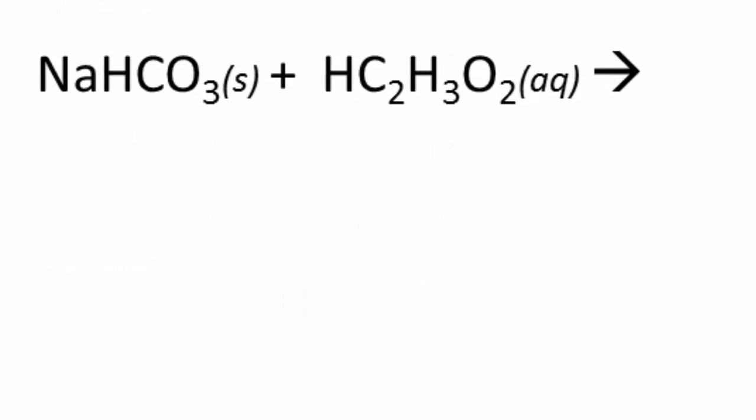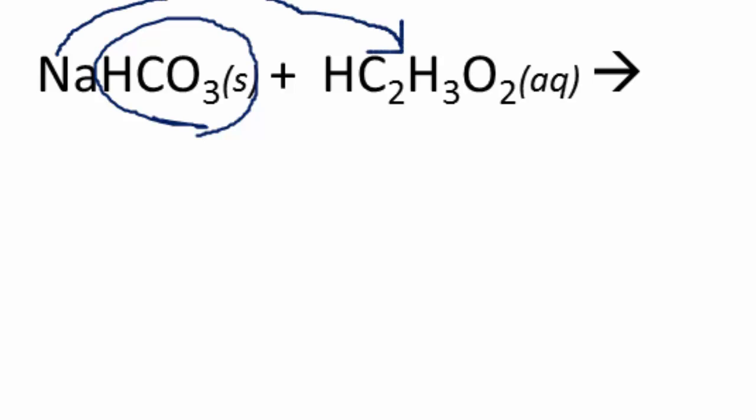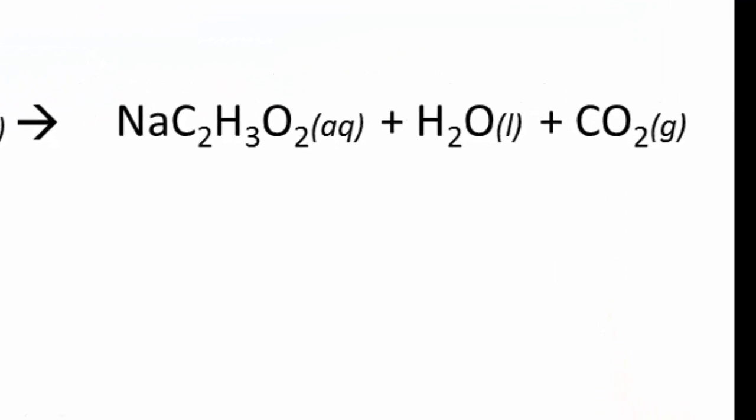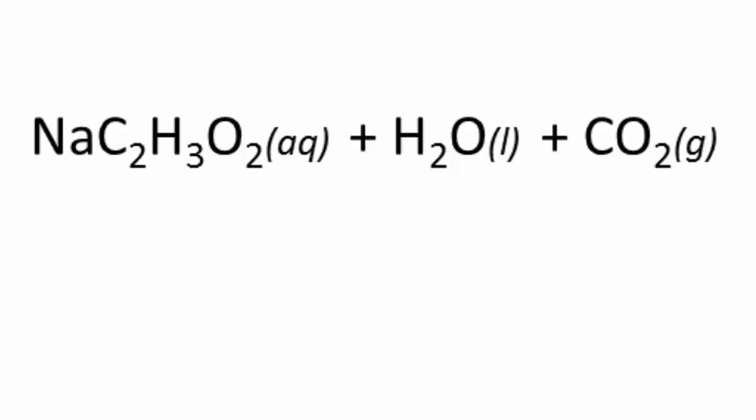First, the complete molecular equation — you simply write the formulas. Sodium hydrogen carbonate: sodium is +1, bicarbonate is −1, so the formula is NaHCO₃. The formula for vinegar is HC₂H₃O₂. Those are the reactants. Anytime you add an acid to a carbonate, you produce carbon dioxide and water. So the products are sodium acetate (aqueous — all acetates are soluble, all Group 1A are soluble), water, and carbon dioxide. That's the complete molecular equation.